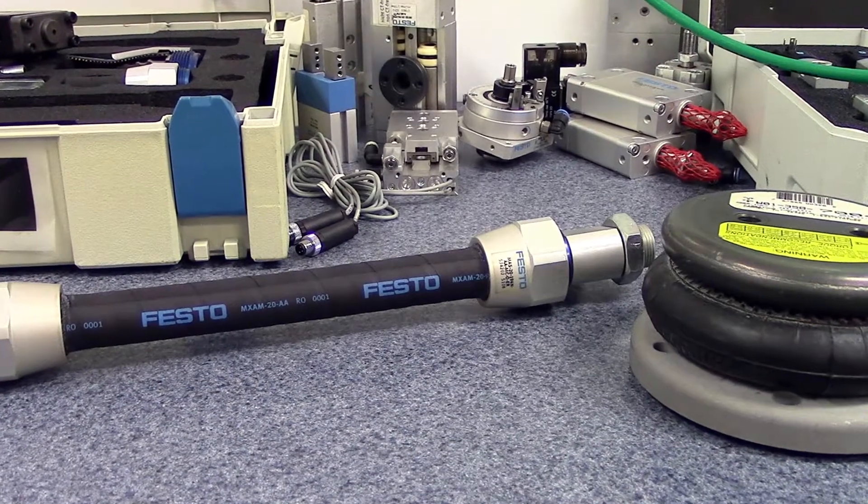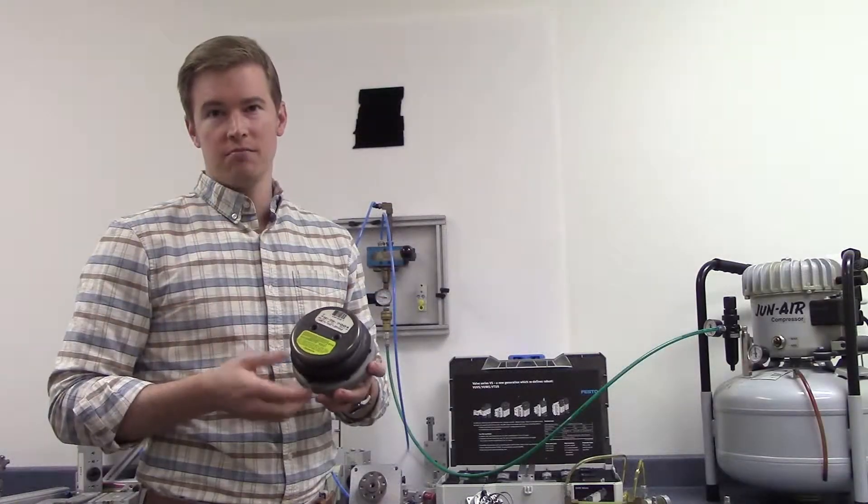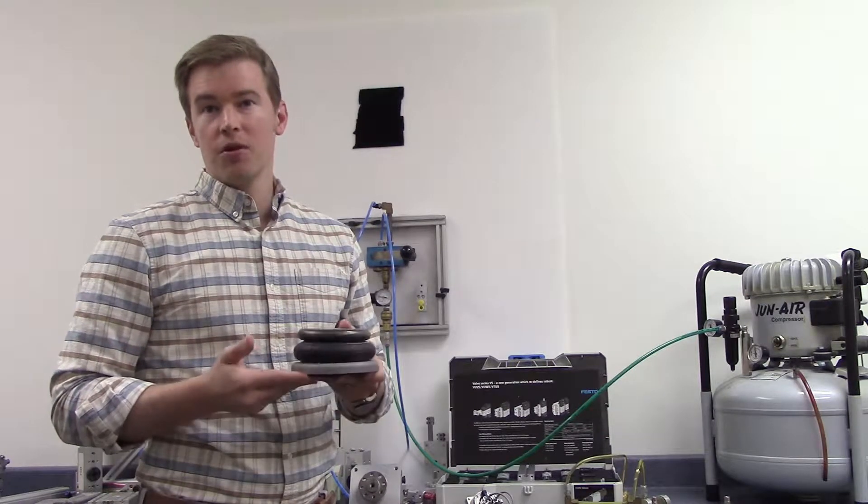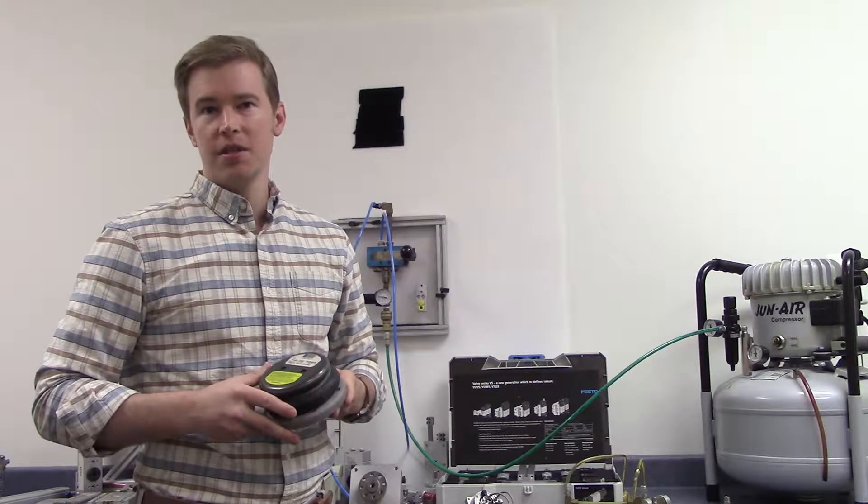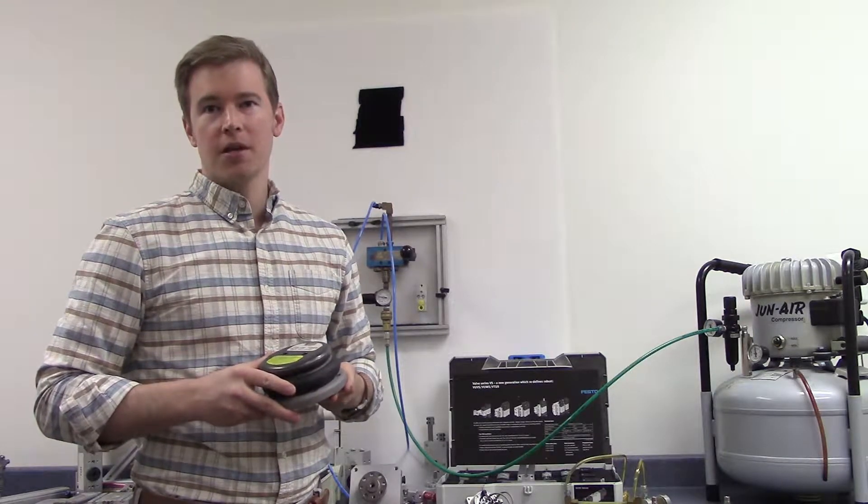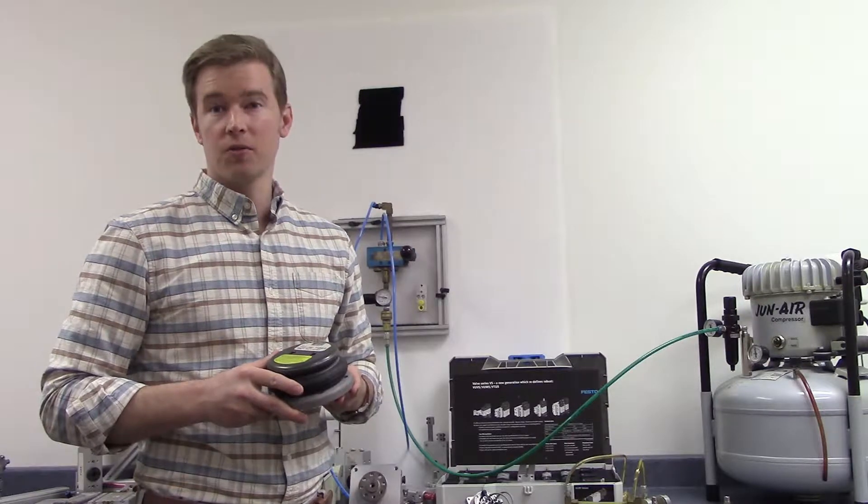The first example is a bellows actuator, or air spring. These are large, flexible air bladders which extend or retract when air enters or leaves them. They're often used in applications where angular motion is desirable, or suspension mechanisms for larger machines.